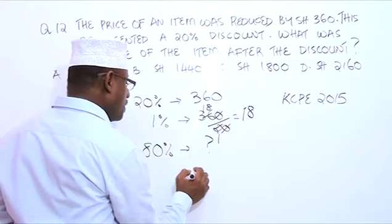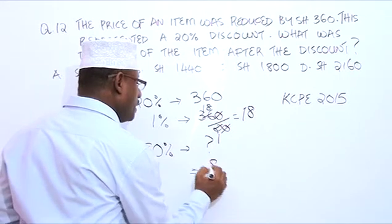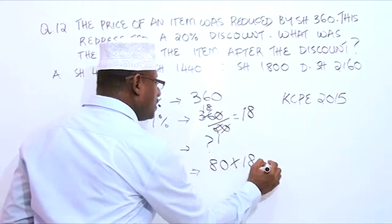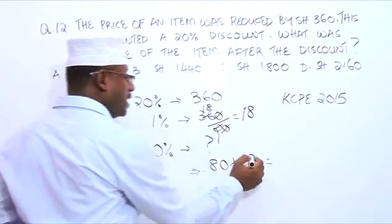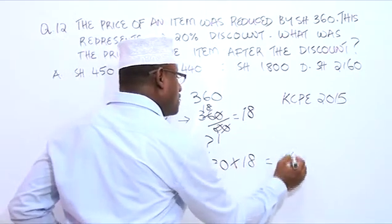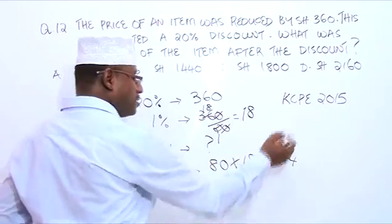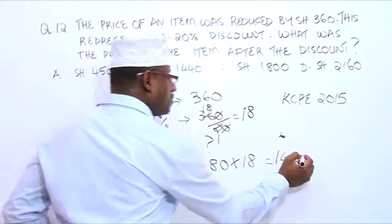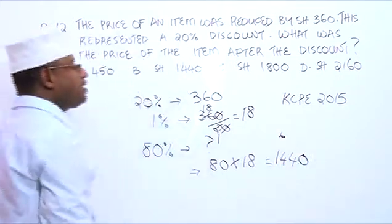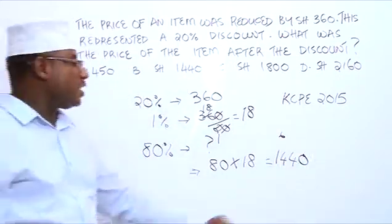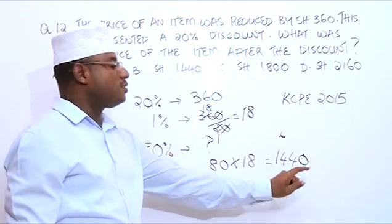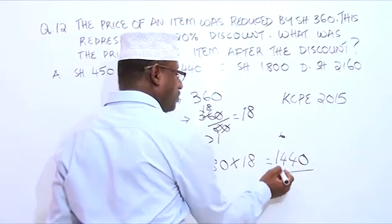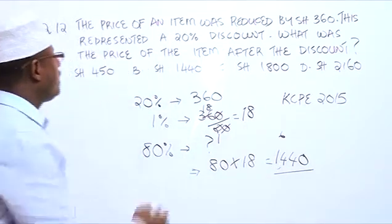80 multiplied by 18: 8 times 8 is 64, 8 times 1 is 8, plus 6 is 14, giving us 1,440. So the price after the discount is 1,440. And the answer is B.